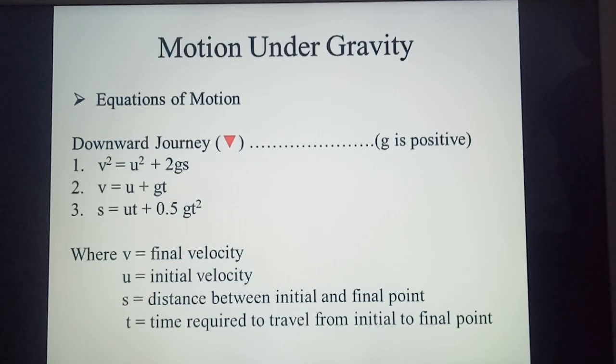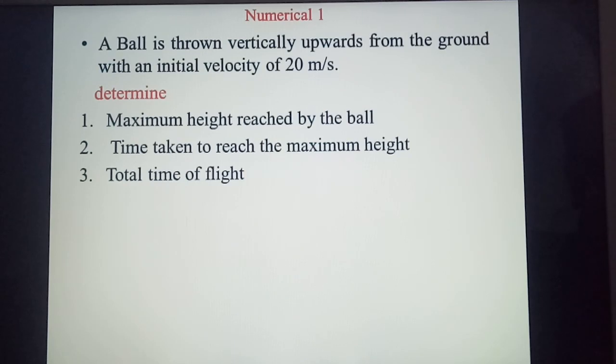And likewise, when we are going for the downward journey, we are going to take g as positive and subsequently we will be having these three equations of motion where g is positive. Now we will move on to the numerical.